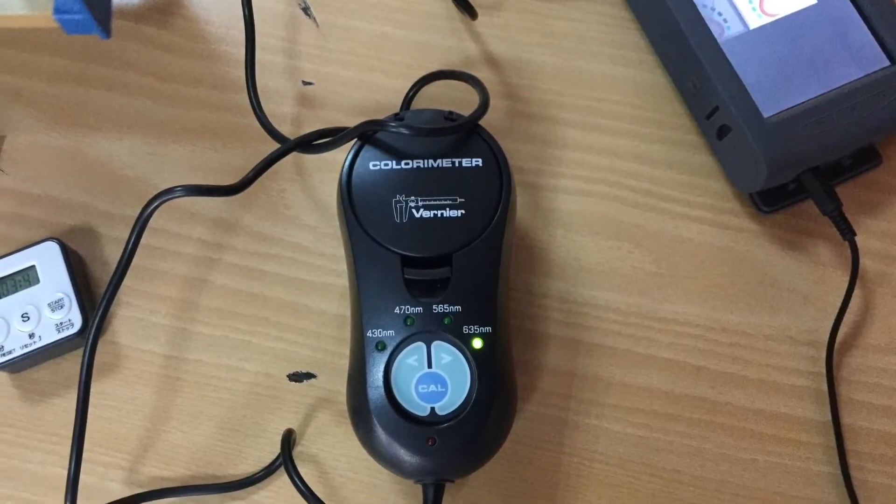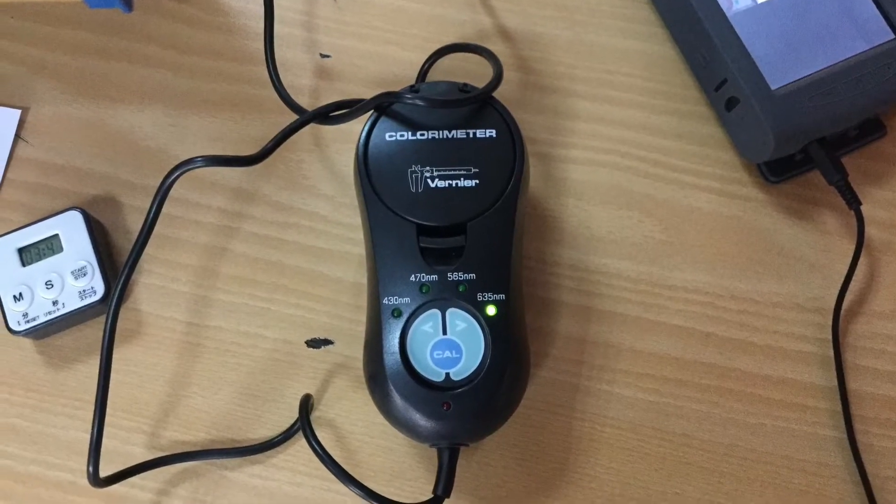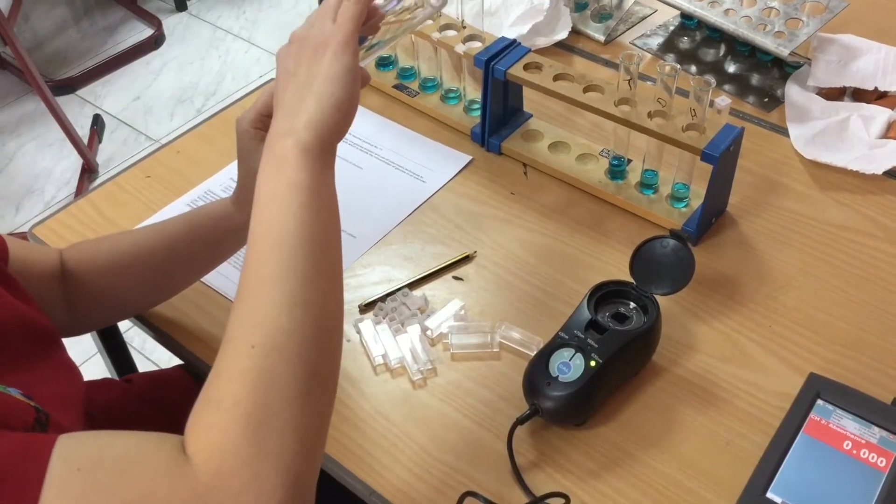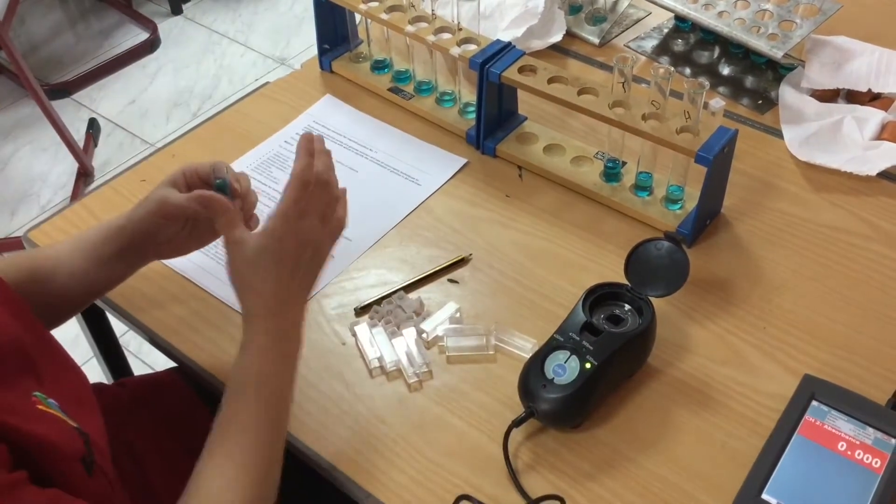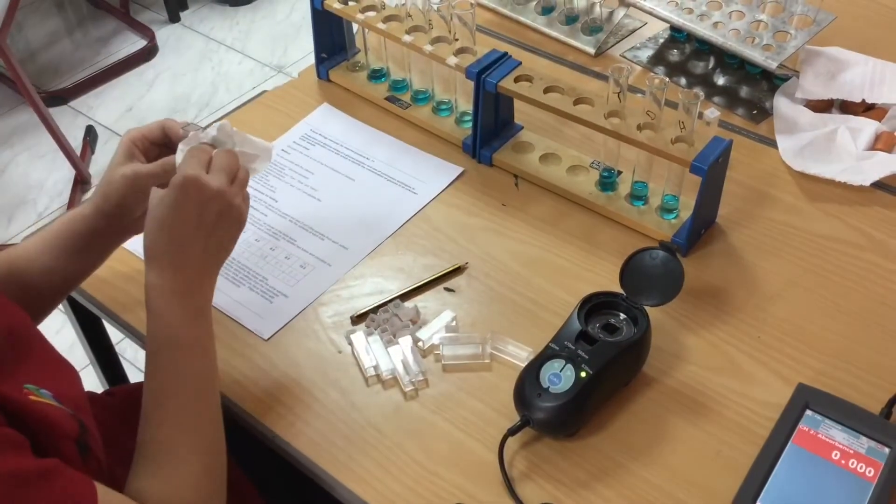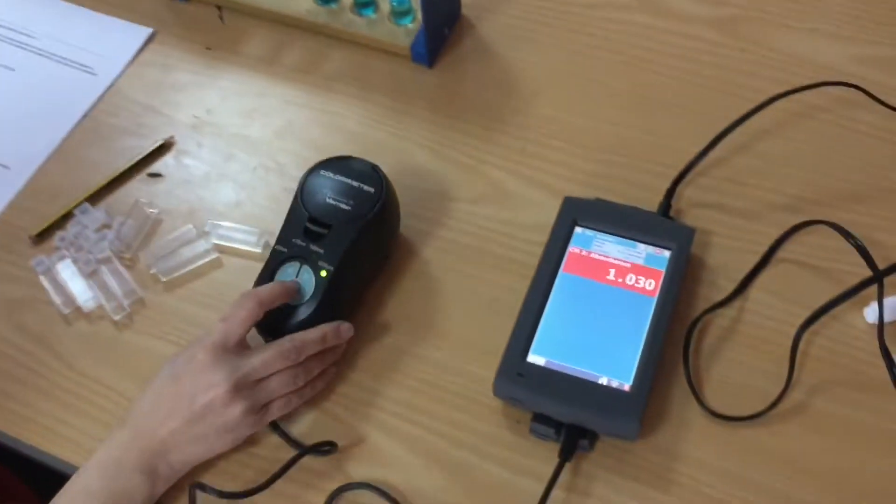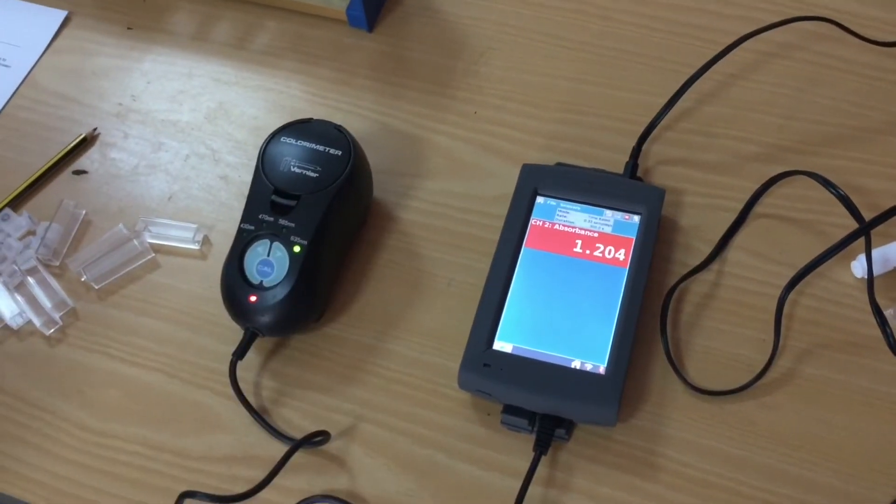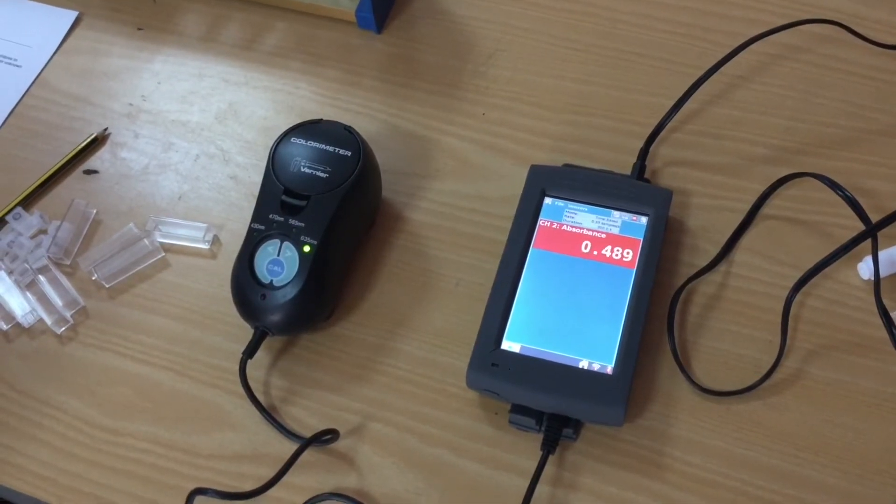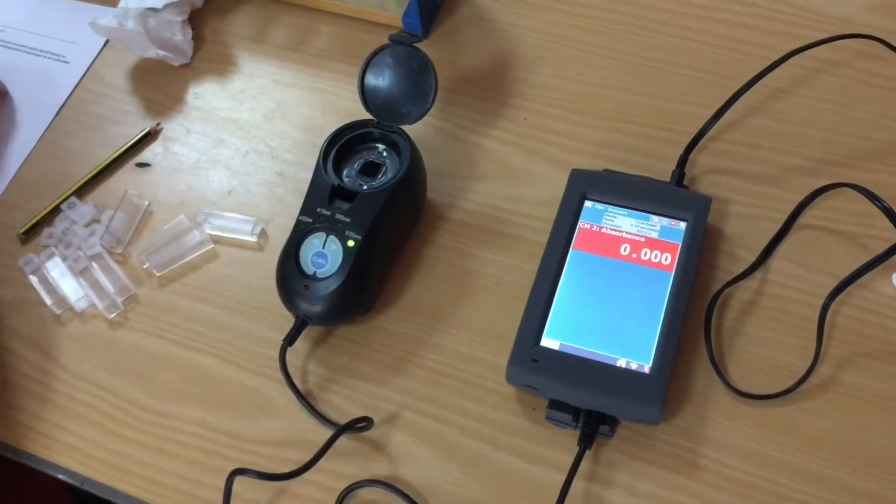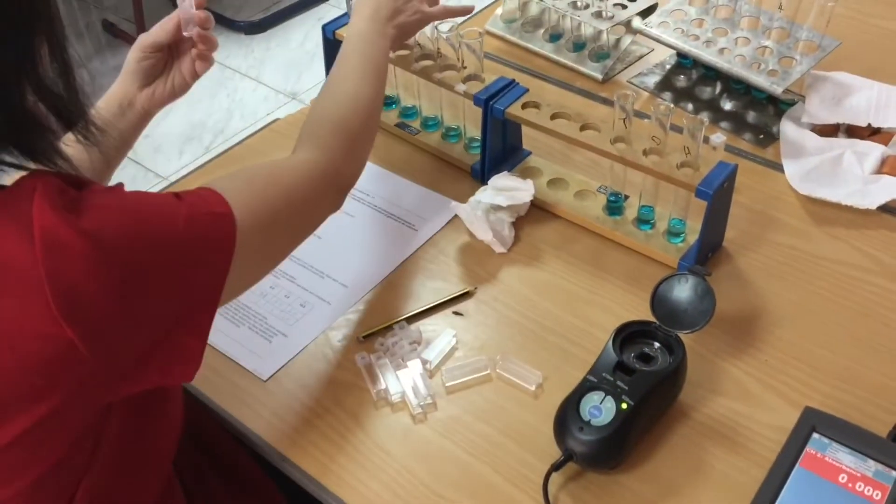Initially I calibrate my colorimeter with pure Benedict solution but I soon find it doesn't work and the reason why is because all the solutions that have contained glucose are now paler and therefore have a lower absorbance than the actual Benedict solution. So this would give us a negative value for absorbance and that can't be read by the colorimeter.